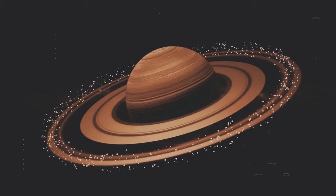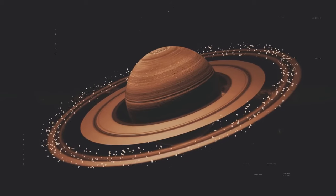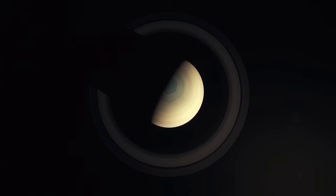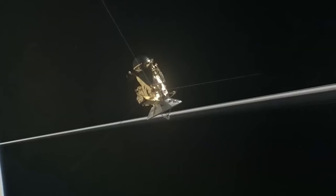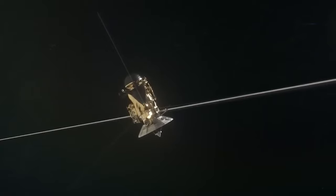Saturn boasts the largest and most distinguishable rings in our solar system, consisting of seven main rings named in order of discovery. They begin approximately 4,300 miles from the planet's core and extend outward for an astonishing distance.